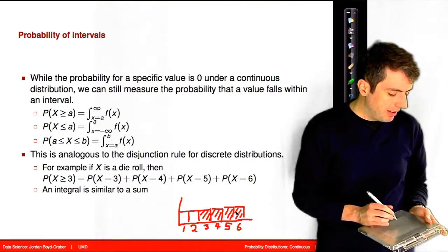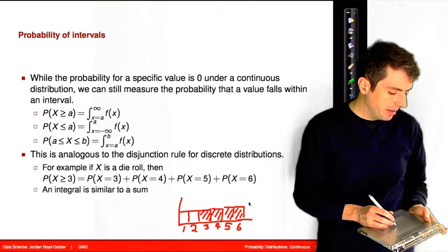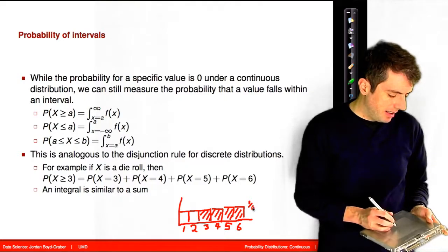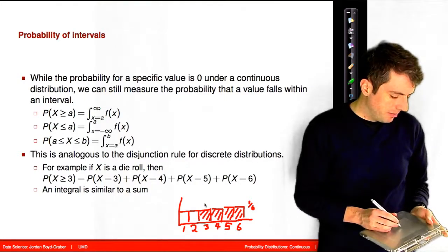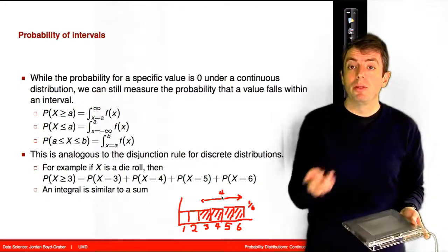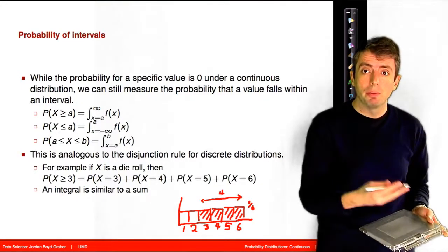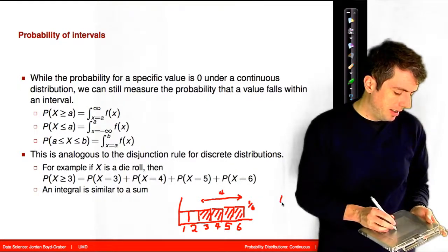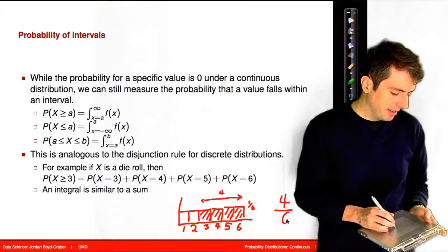And we can even think about this as an integral. So this is a rectangle whose height is 1 sixth and the width is 4. So recall that computing the area of a rectangle is multiplying the width times the height. So this gives us the total probability of 4 sixth.